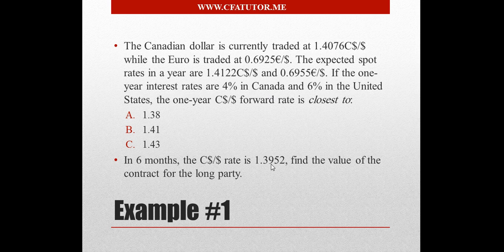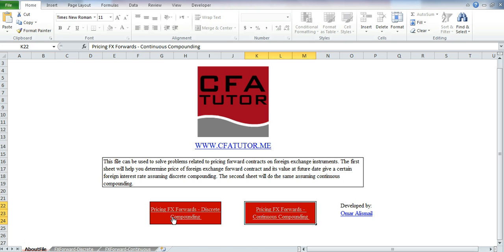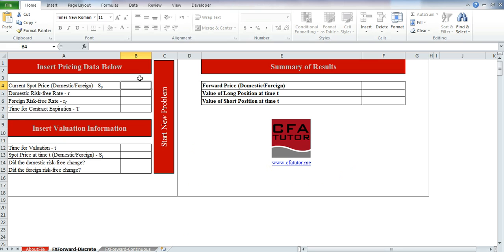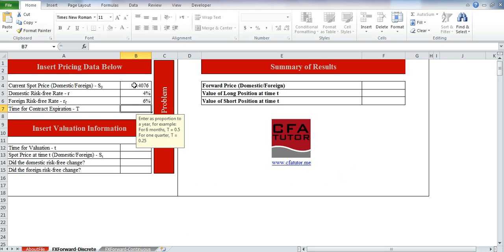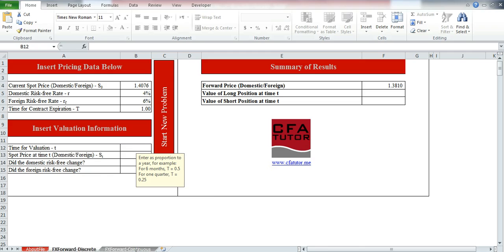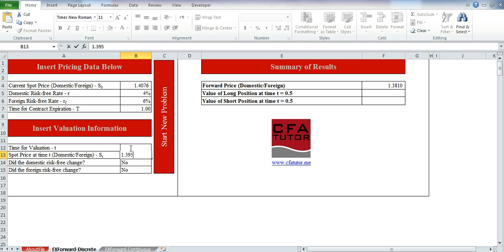In six months, the Canadian dollar per dollar rate is 1.3952 — find the value of the contract for the long party. We're using discrete compounding, so we click on that sheet. The current spot rate is 1.4076, the domestic risk-free rate is 4%, the foreign risk-free rate is 6%, and the time to contract expiration is 1 year. The result is 1.3810, so the answer is A. The time of valuation is 6 months (0.5), interest rates are unchanged, and the spot price at time t is 1.3952. This gives us the value for the long position along with the forward price.